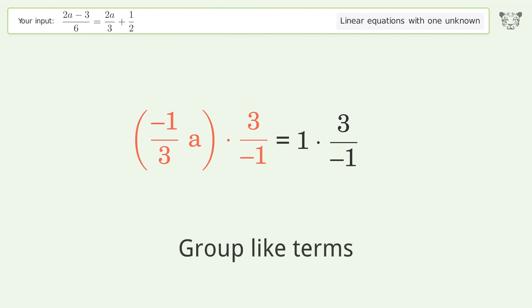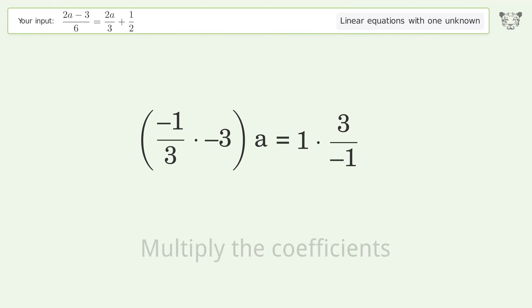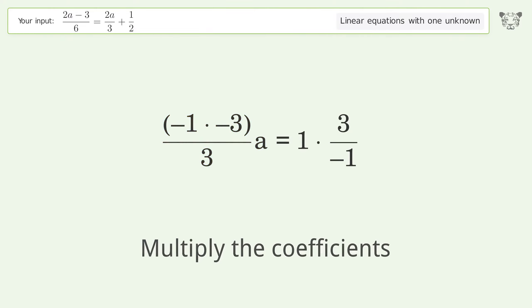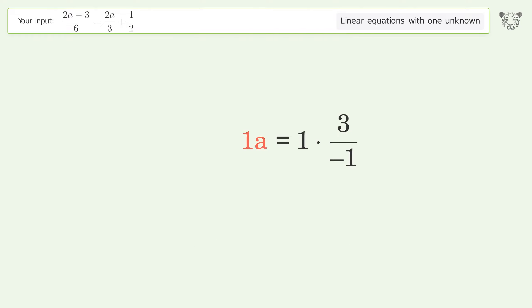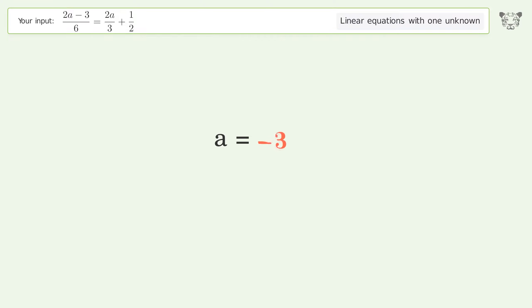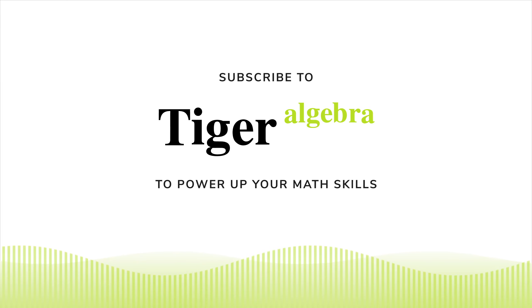Group like terms. Multiply the coefficients. Multiply the coefficients. And so the final result is a equals negative 3.